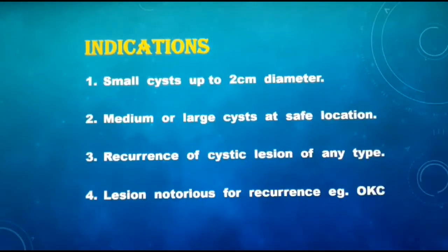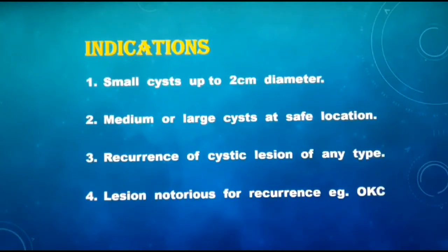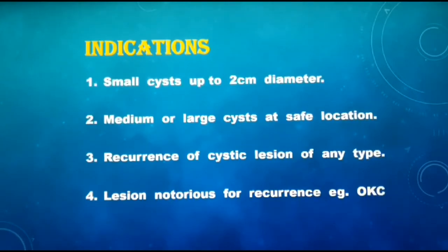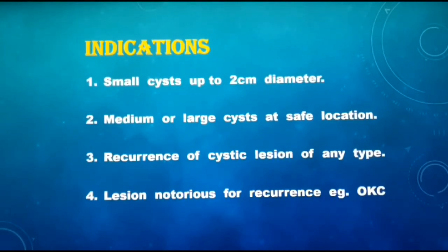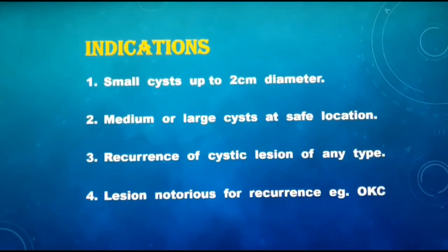The indications of enucleation include any small cysts which measure up to 2 cm in diameter, medium or large cysts at a safe location where there are no vital structures in close vicinity to the cyst, and any recurrent lesions or any lesion notorious for its recurrence — for example, odontogenic keratocyst. These are the common indications of enucleation.